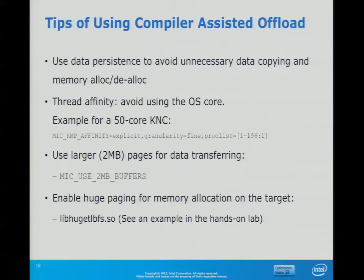Here are a few tips to get better performance from compiler assisted offload. It's the same affinity knobs as with automatic offload. From yesterday's memory session, there are also settings like MCDRAM buffers to use larger page sizes. You can adjust a threshold environment variable that controls when large page sizes are used — the value is the threshold at which large pages kick in. This also implicitly assumes the MIC prefix.